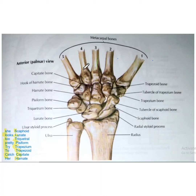Hi everyone. In this video we will study carpal bones — their site determination, identification, important features, and some general features of these carpal bones. The wrist or carpus of the upper limb consists of eight carpal bones.